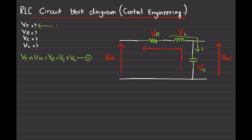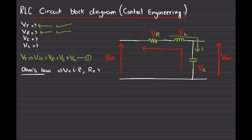Now we'll jump on equation number two, which is the voltage drop across the resistor. From Ohm's law we know that voltage equals the product of current and resistance, resistance equals voltage times the reciprocal of current, and current equals voltage times 1 over R.